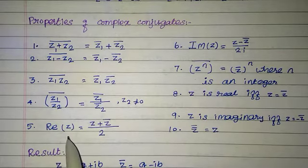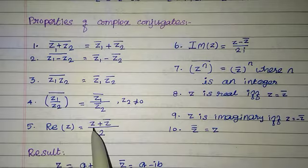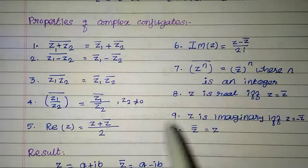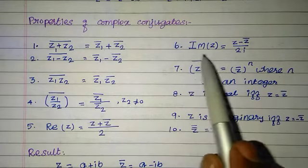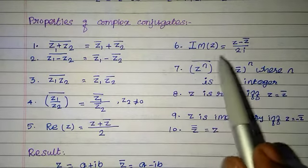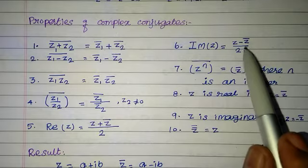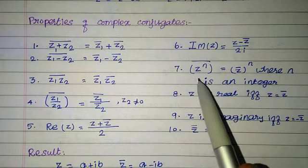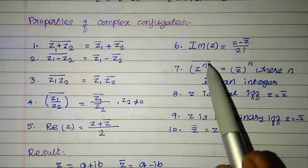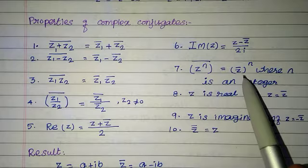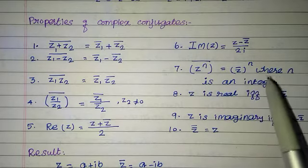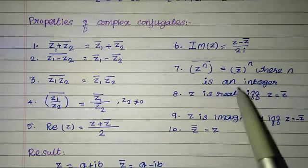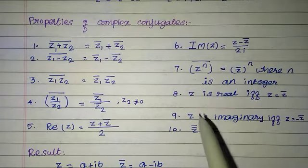The real part of z equals z plus z bar divided by 2. The imaginary part of z equals z minus z bar divided by 2i. z power n, the whole bar, equals z bar whole power n, where n is an integer.